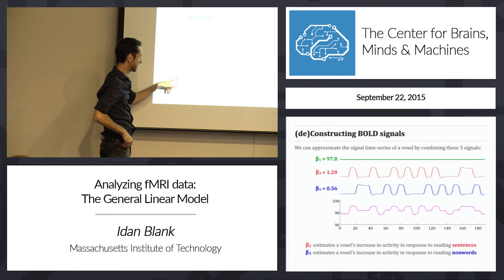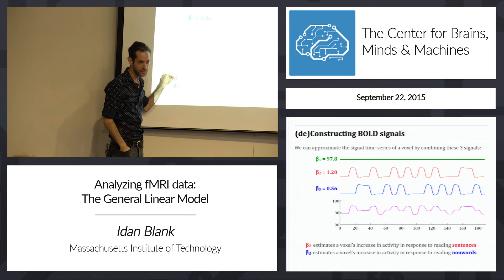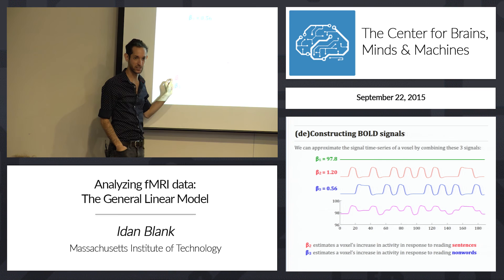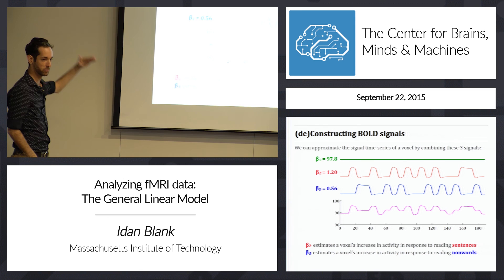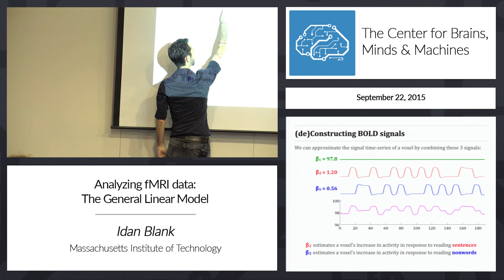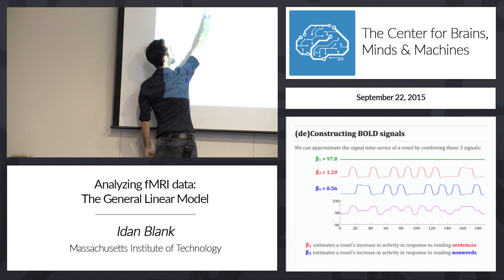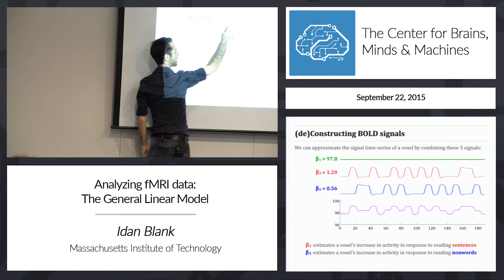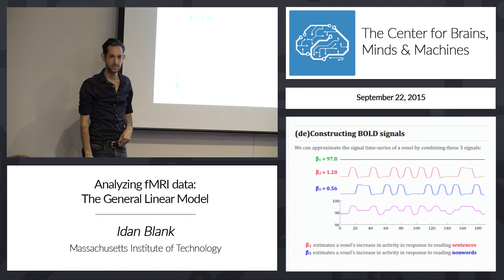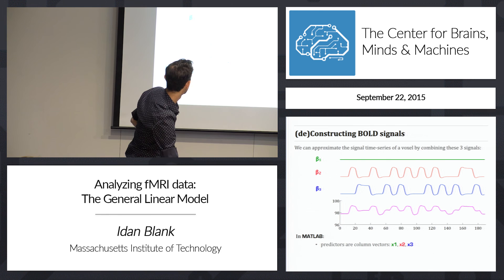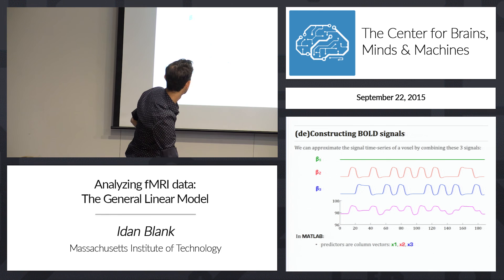Beta 2, or the beta for sentences, estimates a voxel's increase in activity in response to sentences — that's what that number tells you. Even grad students who have worked with fMRI data for five years often can't give this definition: a beta weight tells you how much the signal increases in response to sentences. Specifically, a beta of 1.2 means that when the predictor goes from 0 to 1, the signal increases by 1.2 units; a beta of 0.5 means the signal increases by half a unit.